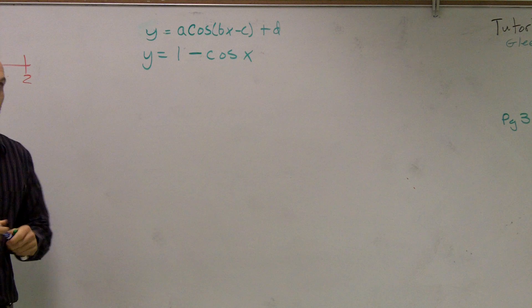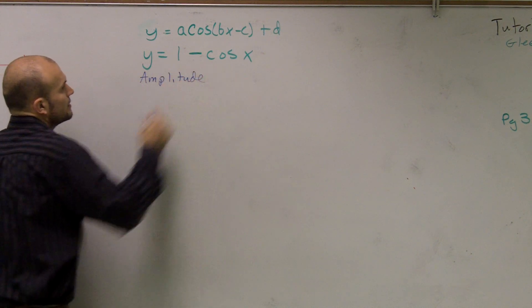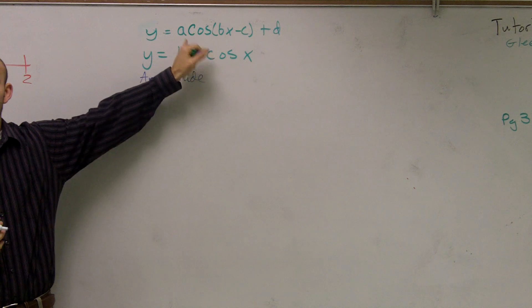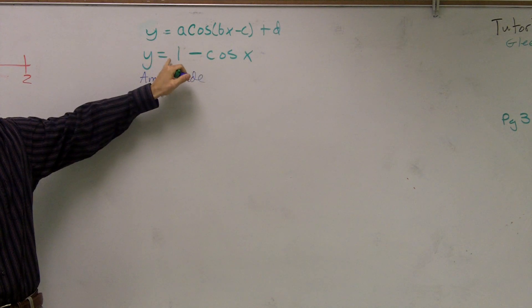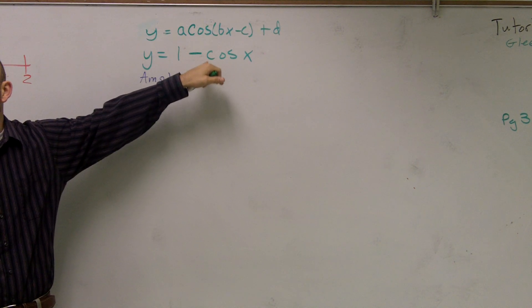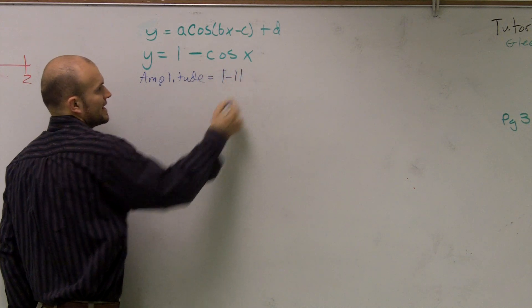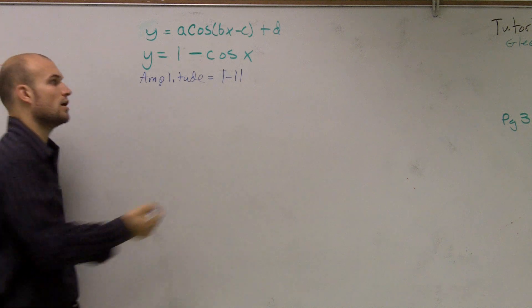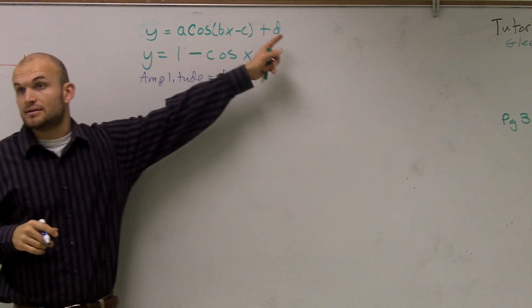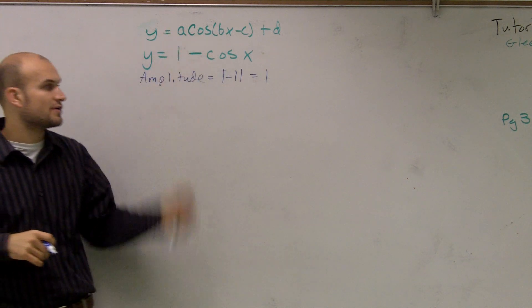So first of all, guys, we just go through our steps. Find the amplitude first. The amplitude, remember, is your absolute value of a, the number that is in front of your function. Make sure it's the number that's multiplied. So some of you might say, oh, well, one's in front. Yes, but one is not being multiplied by cosine, right? You actually have a negative one being multiplied by cosine. So my amplitude is going to be the absolute value of negative one, which is obviously one. Yes, Robert? Is one the d? One is going to be my d. Yes, very good. What I did was I just rewrote the function where my d is actually in front.